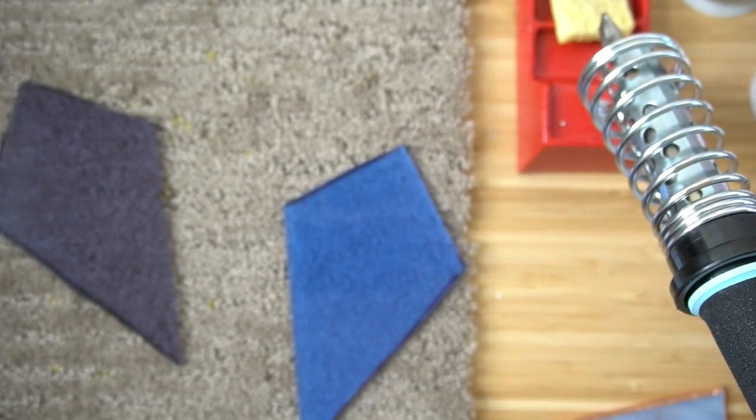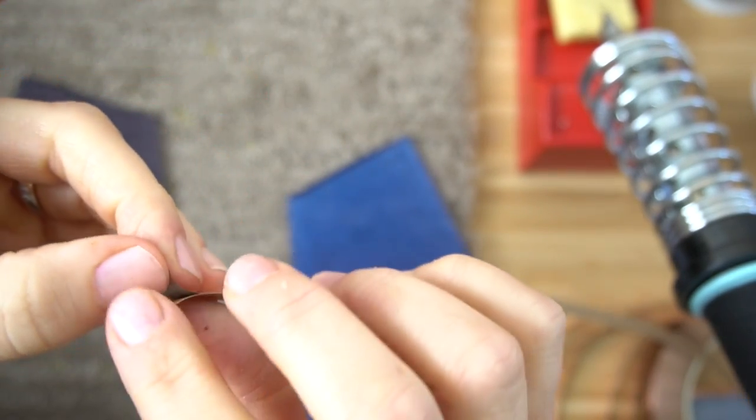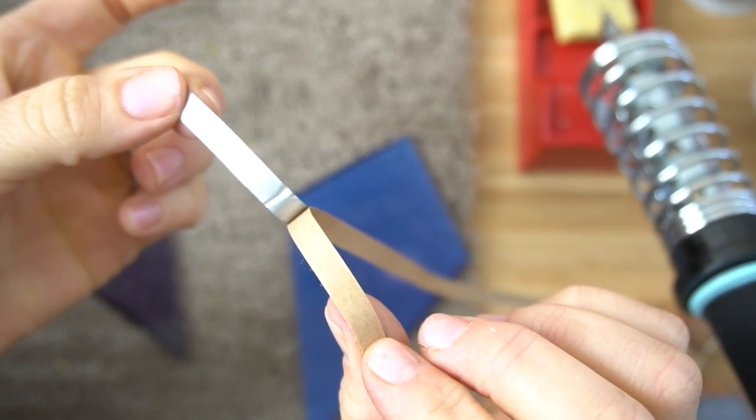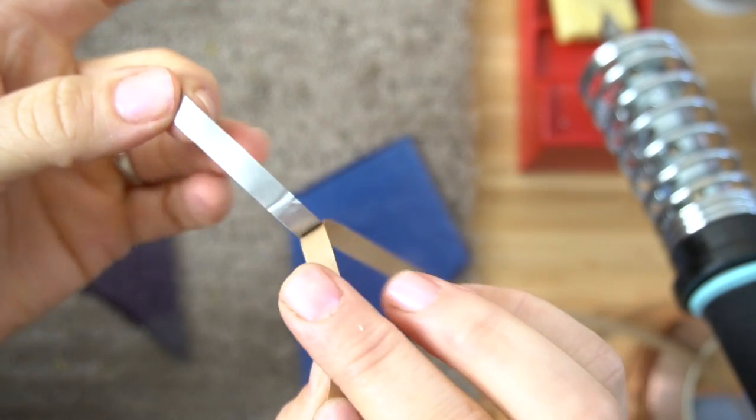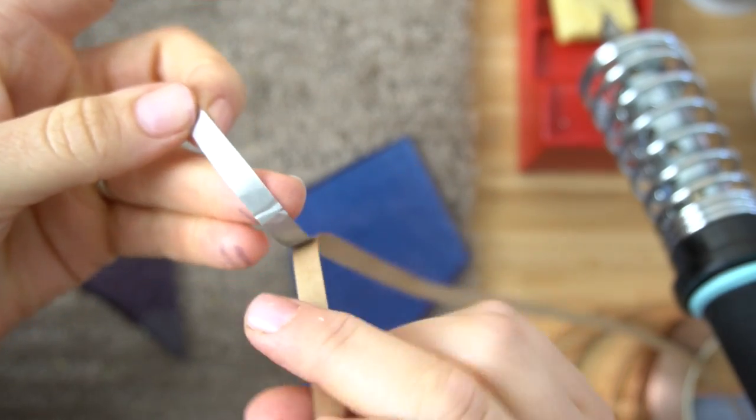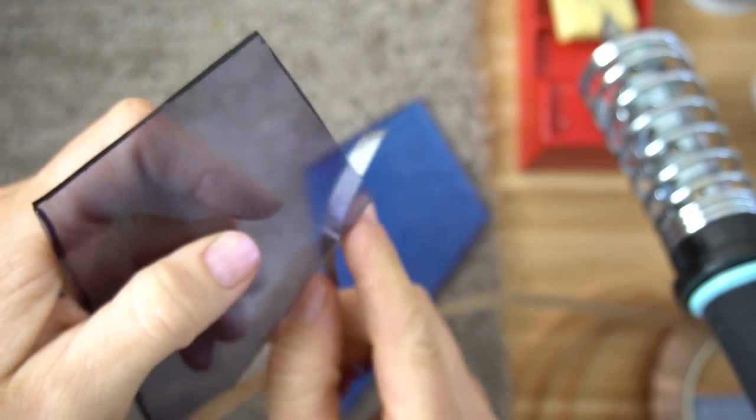When you open up the copper foil, you want to peel this cardboard stuff away. And then this side is really sticky. You want to place your piece of glass so that it's pretty even on both sides.